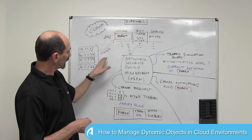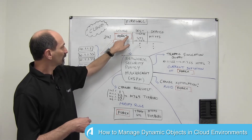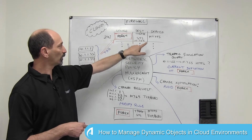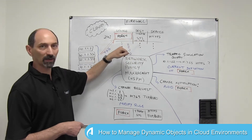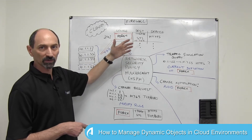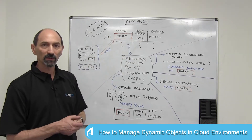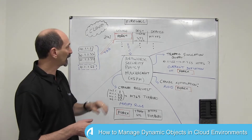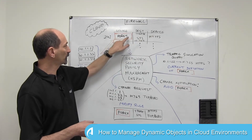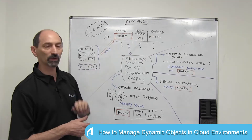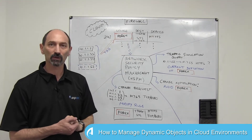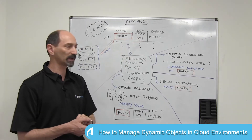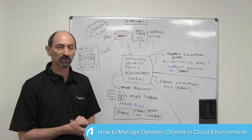Once you tag them, you can use the logical name inside the firewall rules to allow or deny traffic from or to all the servers that are currently tagged. Here you can see a rule, rule number 24, that refers to this object called Forex, allowing traffic from it to the trading system using HTTPS.